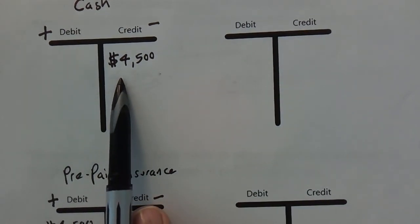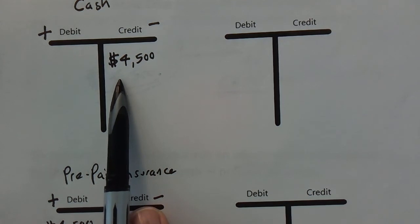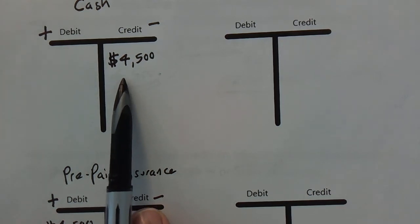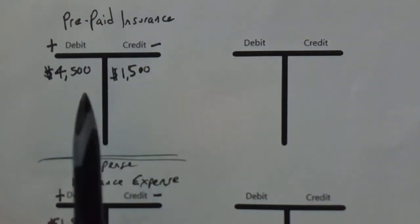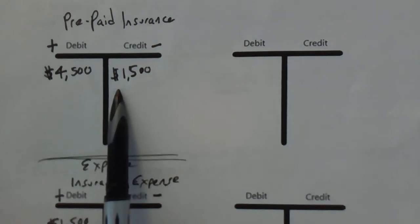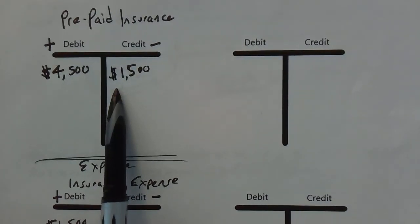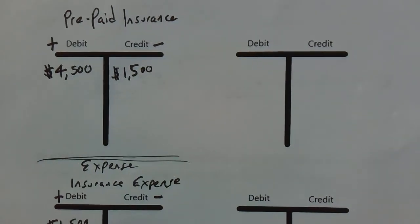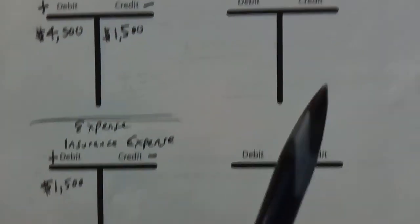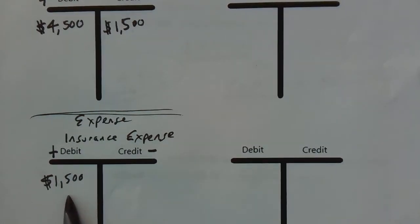We would not credit another $1,500 because there's actually nothing coming out of the cash account. We're reducing our bookkeeping asset of prepaid insurance, and we're going to debit our insurance expense for that same amount.